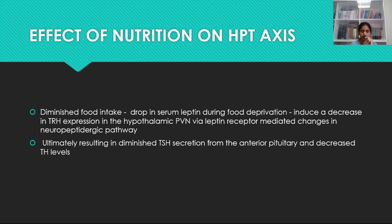What is the effect of nutrition on the hypothalamic-pituitary-thyroid axis? Decreased food intake and starvation will cause a decrease in the leptin hormone. This decrease in leptin in turn decreases the expression of TRH in the hypothalamus, ultimately resulting in decreased TSH secretion and decreased thyroid hormone levels in the serum.